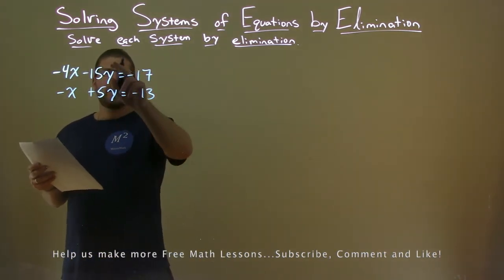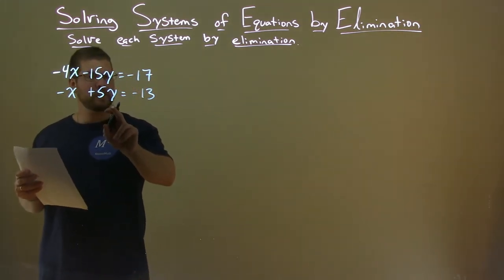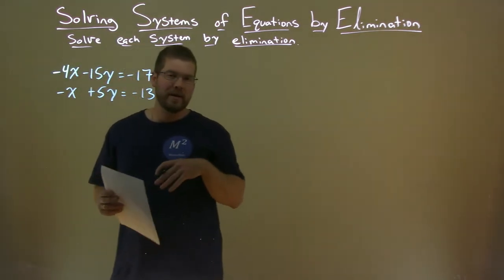Well, I notice here we have negative 15y and a positive 5y. So 5y, I know, times 3 is 15, and then we can add the two equations and eliminate y.